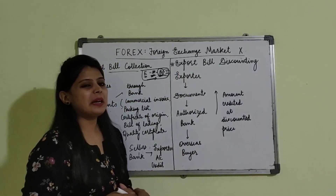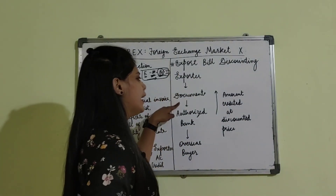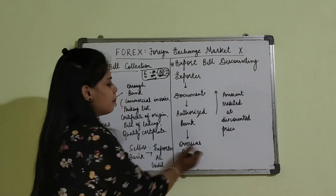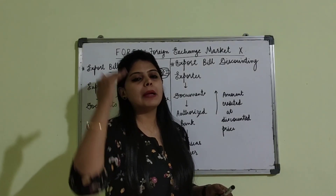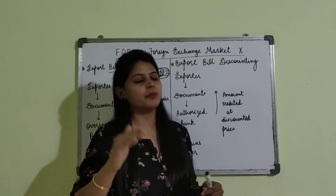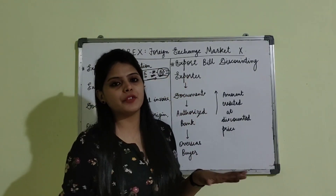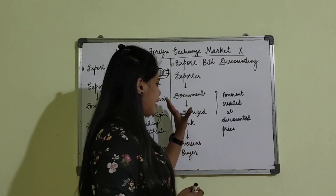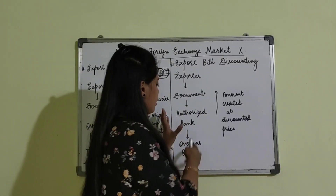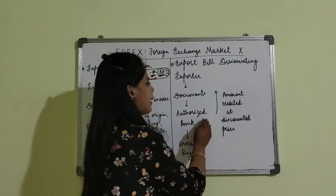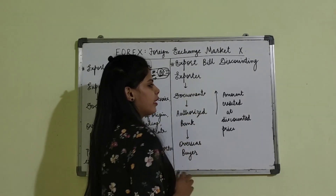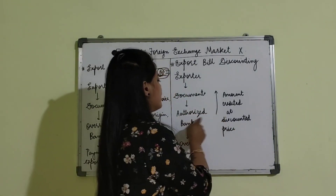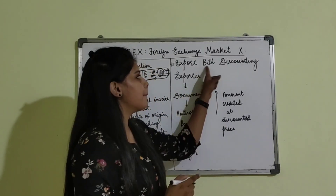On the other hand, export bill discounting. In the case of discounting, the exporter sends the documents through its authorized bank to the overseas buyer. But in this case, the authorized bank will not wait for the payment to be received from the importer and then credit it to the exporter. It will directly credit the amount to the exporter's account at a discounted price — after cutting its commission. This is bill discounting.